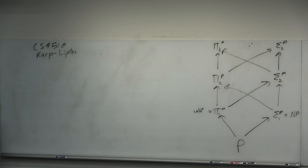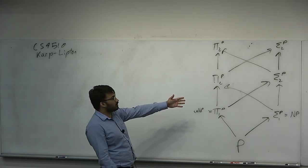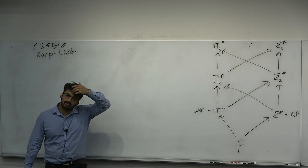Karp was the second person to realize — Steve Cook proved SAT was NP-complete, and Karp proved 21 related problems that were NP-complete. So he's known for this. The polynomial time hierarchy — we have a picture of it here. It's this big, beautiful, infinite hierarchy of classes.